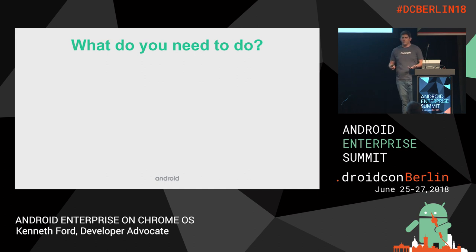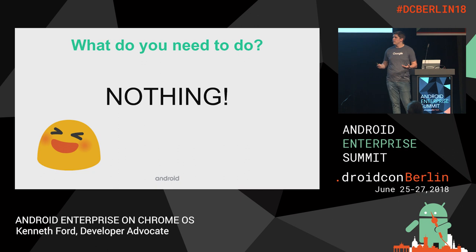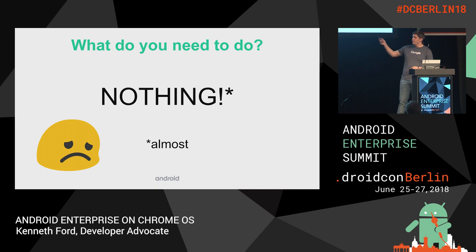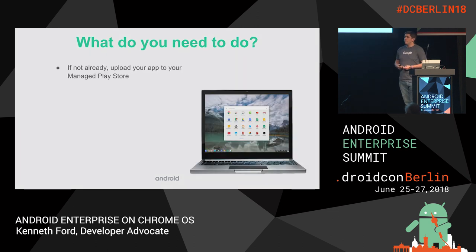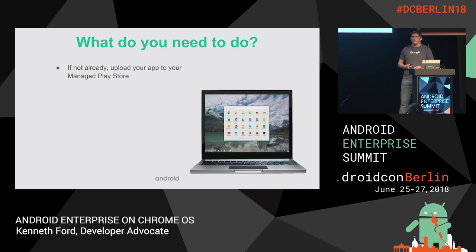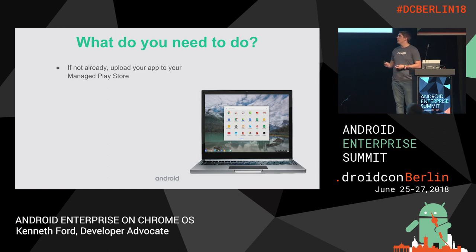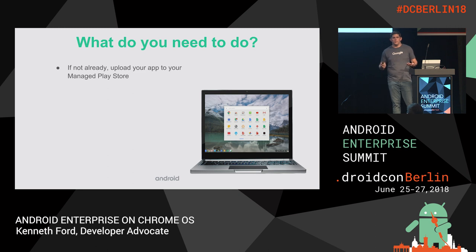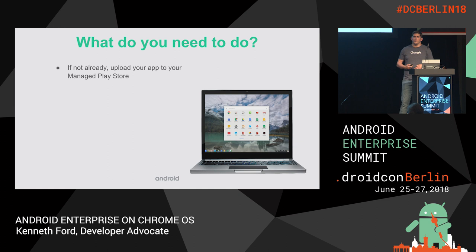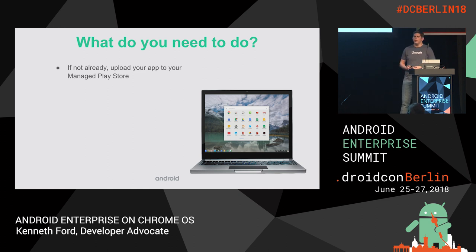So what do you need to do to bring your apps to Chrome OS? Could we say you have to do nothing? Almost. First, if you're not already uploaded to your managed Play Store, you should push your apps through there. The biggest reason is that restrictions and configurations work a lot easier through the Play Store, as the device can ensure restrictions are in place before the app is opened. Also, on Chrome OS, the only way to sideload an application is if you're already in developer mode, which means full root permissions on a Linux device.